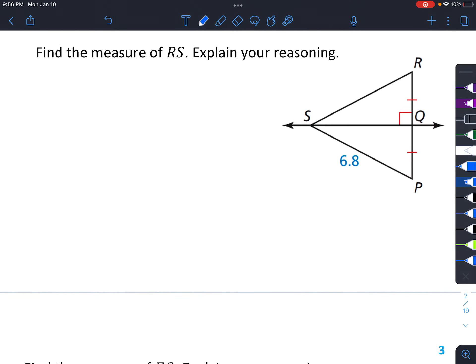It says find the measure of RS, explain your reasoning. So it looks like RS is what we're looking for. And notice that we do have a right angle right here. We have two equal sides, which means that this is a perpendicular bisector.